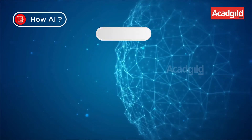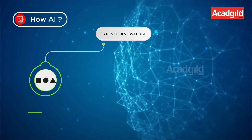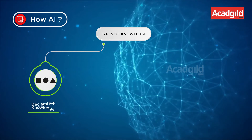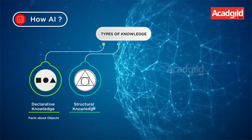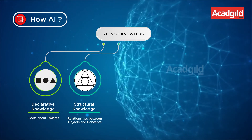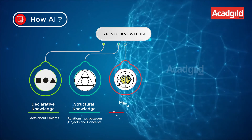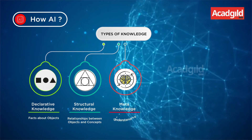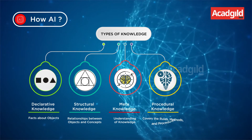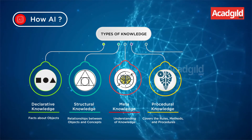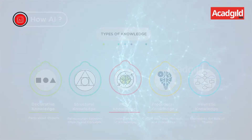How AI? AI establishes rules using the following types of knowledge: declarative knowledge — facts about objects; structural knowledge — relationships between objects and concepts; meta knowledge — understanding of knowledge; procedural knowledge — rules, methods, and procedures; heuristic knowledge — rules of thumb.